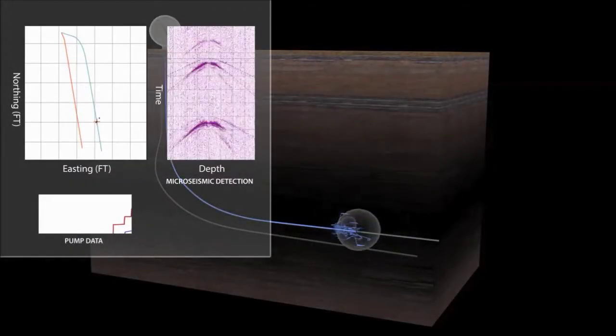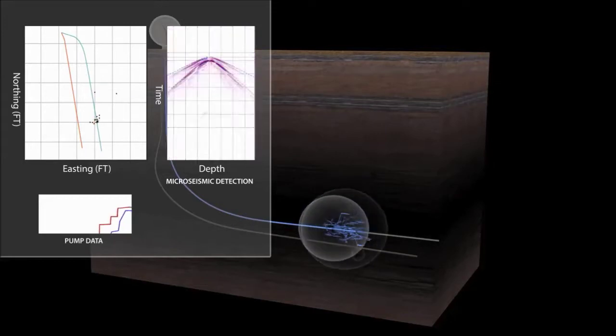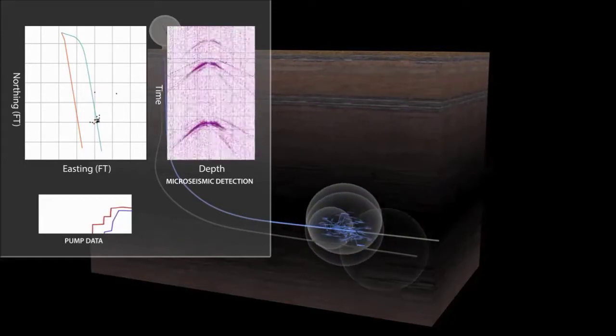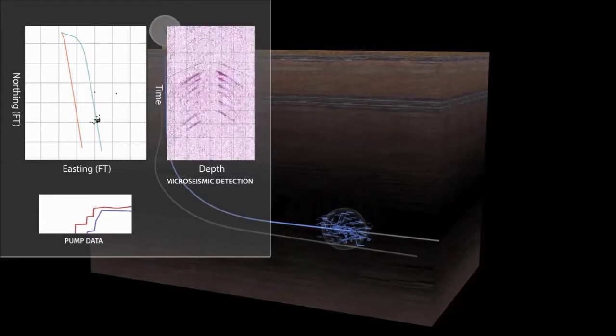The right-hand detection window in this animation shows examples of real events from a plug and perforate completion. Event counts for a two-hour stage can reach 2,000 and include events down to an estimated minus 2 magnitude.